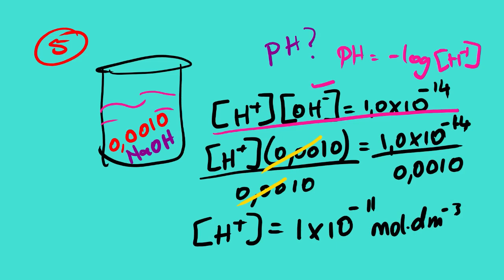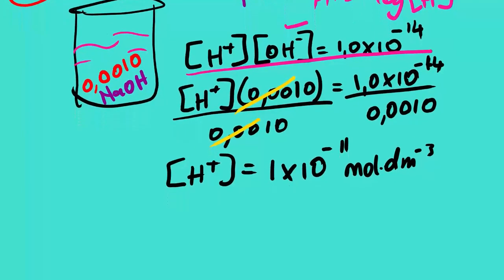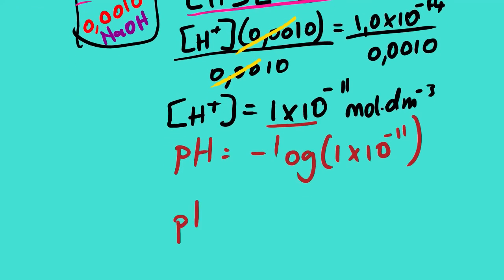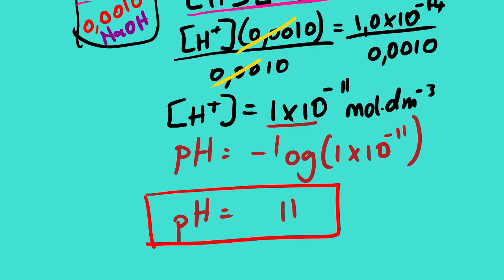This is the concentration of hydrogen ions in 0.0010 mol/L sodium hydroxide solution. From here we can calculate the pH: pH = −log(1 × 10⁻¹¹) = 11. So the pH of this sodium hydroxide solution is 11.